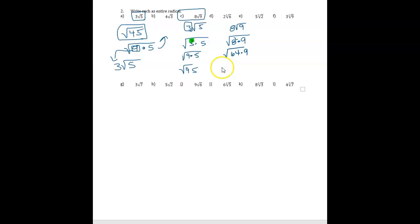We have 64 times 9. And you would get 576. So this is an entire radical. We start with a mixed radical.